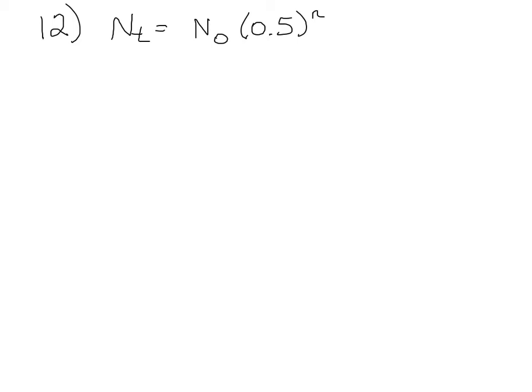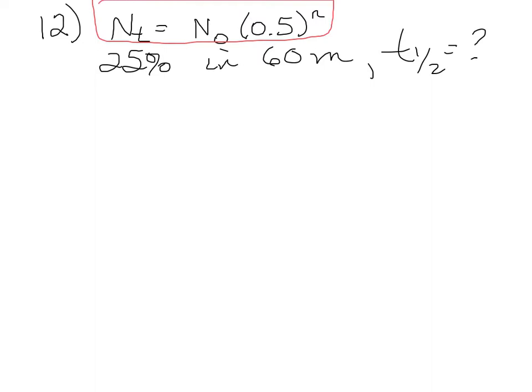Question 12 said that there's a compound that decomposes by first order kinetics. It says that 25% of the compound decomposes in 60 minutes. And it's asking what half-life is. So my first instinct is to use the equation here that we know for radioactive decay, where N is the number of half-lives, and that equals total time divided by the time of a half-life.